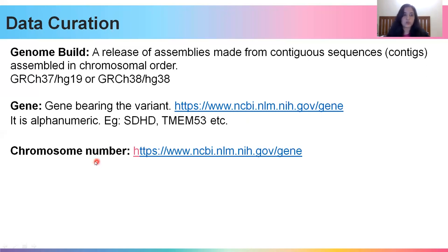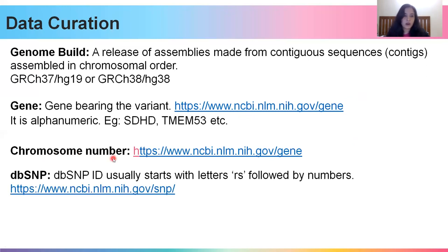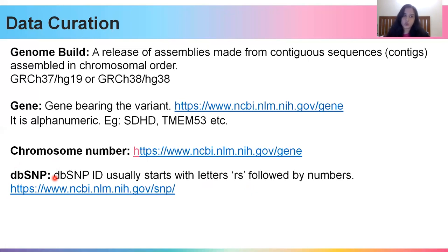The chromosome number — what chromosome does the gene lie on — can be found on the NCBI gene page. For example, if you search for SDHD and click on the Homo sapiens entry, you will find all details including the chromosome number. Next is the RS ID. dbSNP is also hosted on NCBI. The SNP ID we discussed previously is an RS ID — a unique ID that points to a particular variant. Using tools like Mutalyzer, an RS ID can give you access to all other HGVS IDs.